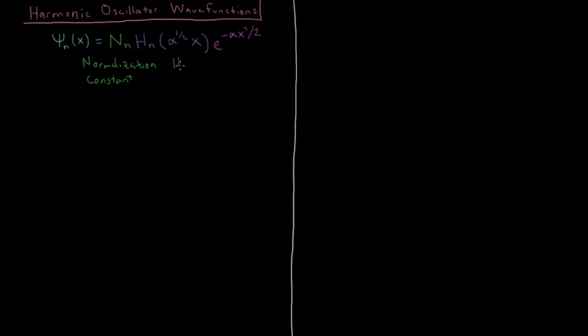The polynomials, as I said, we're going to call the Hermite polynomials, which are a special kind of polynomial that we'll discuss what those values are. And this e to the minus alpha x squared over 2 is a Gaussian function, which you may be familiar with from other places, including statistics.